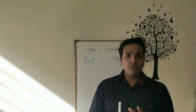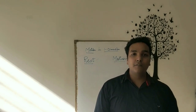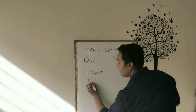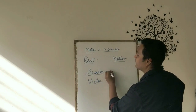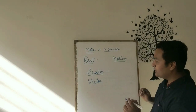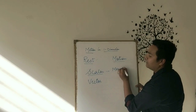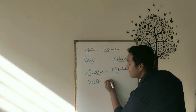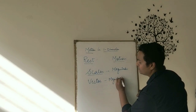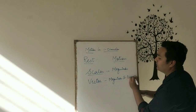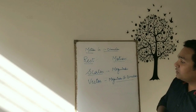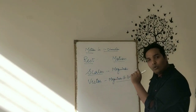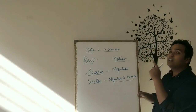Now we'll move to the next topic, and before starting that topic, there are two terms you should know about. First is scalar quantity and the second one is vector quantity. The quantity which has only magnitude is termed as scalar quantity, whereas a quantity which has magnitude as well as direction is known as a vector quantity.